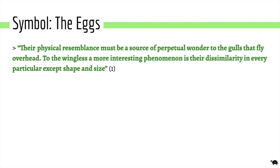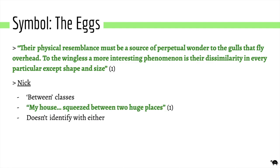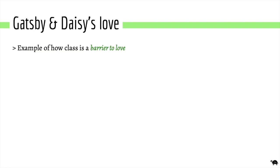Another symbol of the class divide between old money and new money are the eggs. The similarities yet differences of the eggs emphasise the barriers that prevent Gatsby or any new money people from successfully advancing in class. Nick's house being squeezed between the two could link to his supposed unbiased narration, but that's a whole other topic.